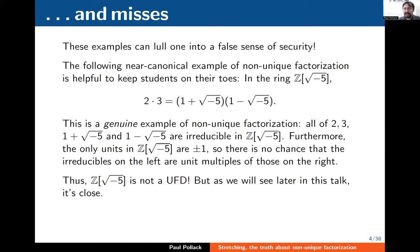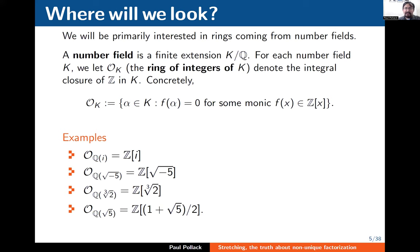So Z[√-5] is certainly not a unique factorization domain. One of the points I want to make in this talk is that there's a sense in which it's close to a unique factorization domain. You should be asking — well, what do I mean by that? I'm going to talk about what I don't mean by that before I talk about what I do mean, but first let me zero in on the class of rings I'll be thinking about.